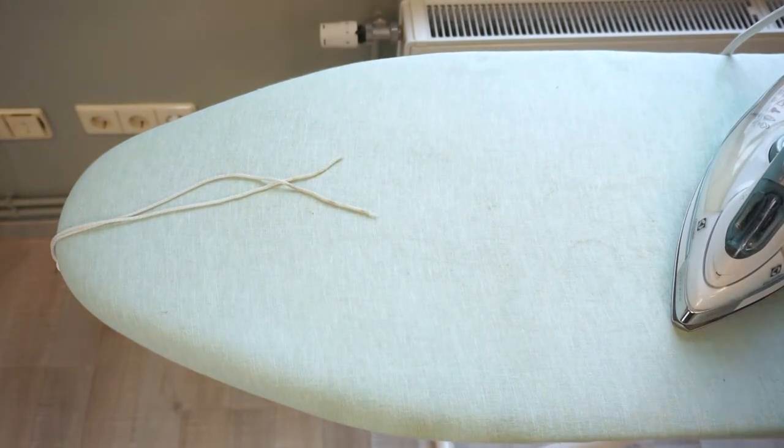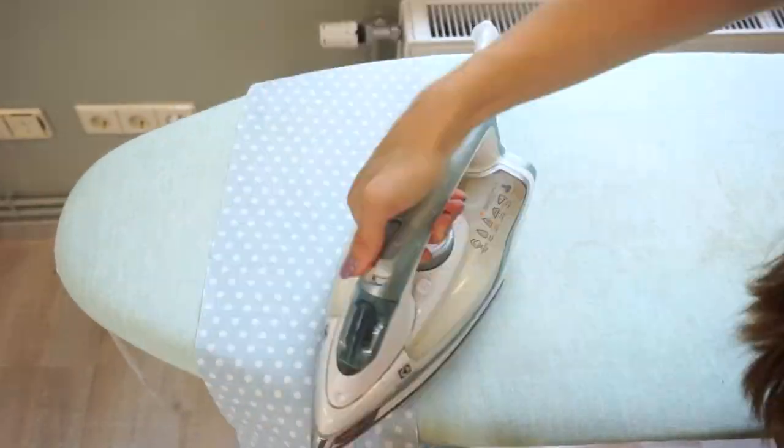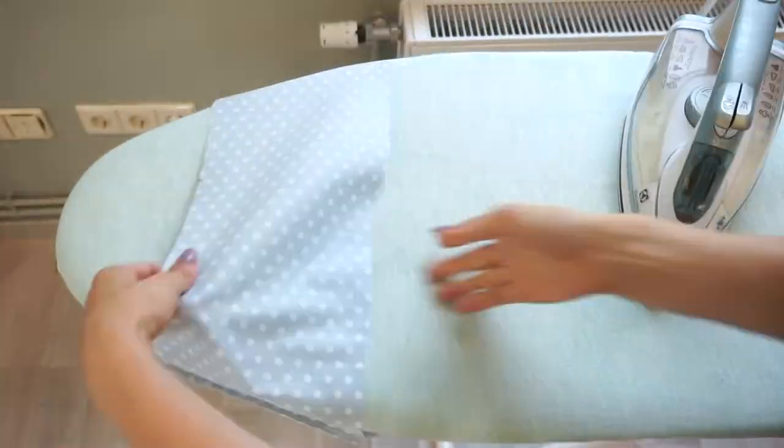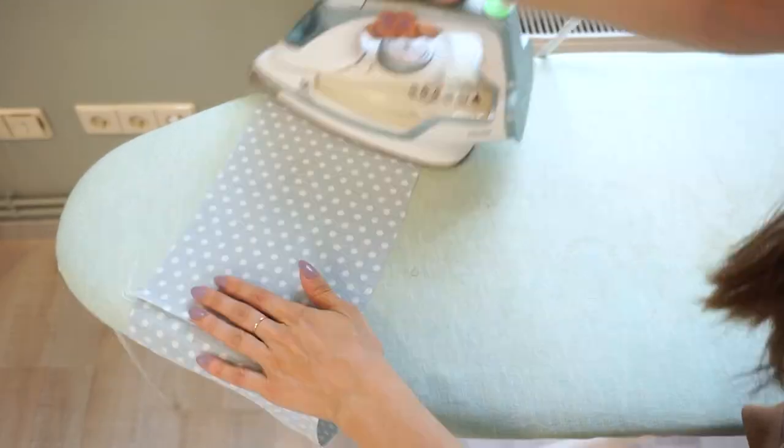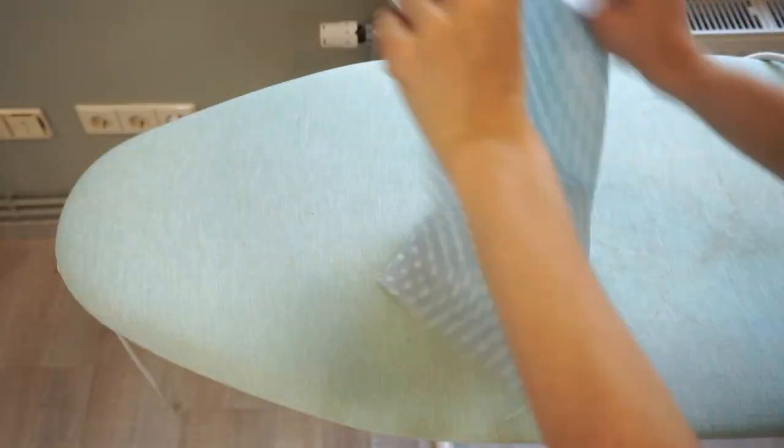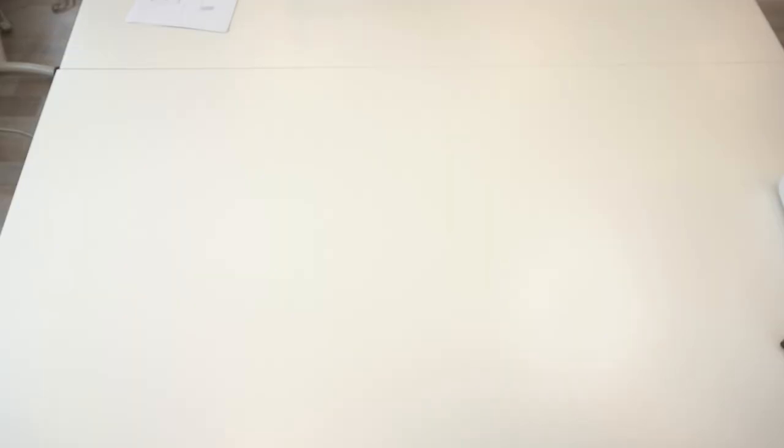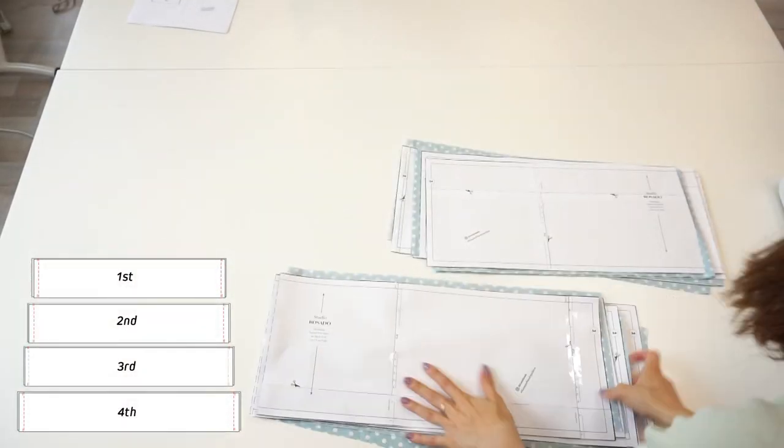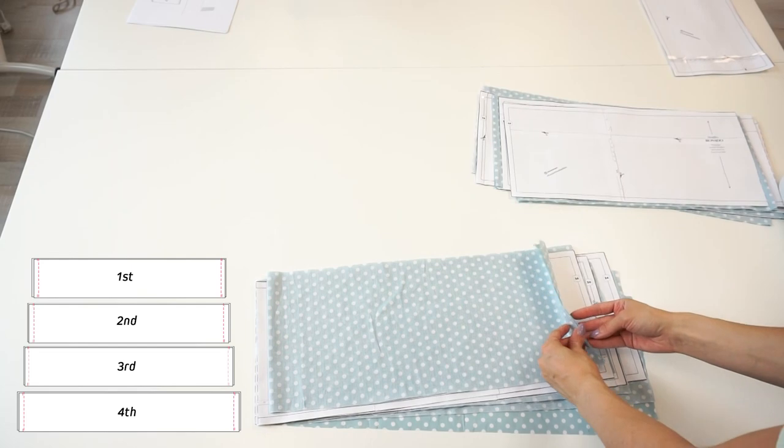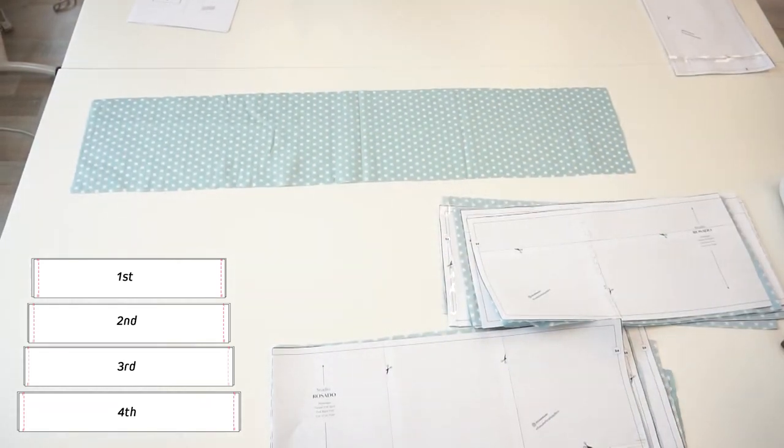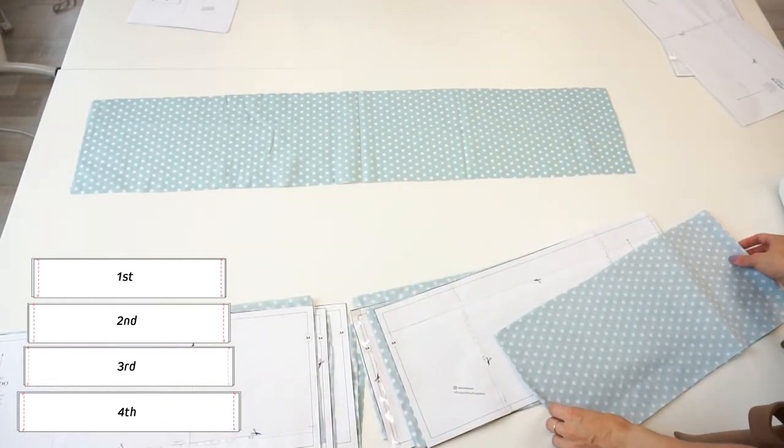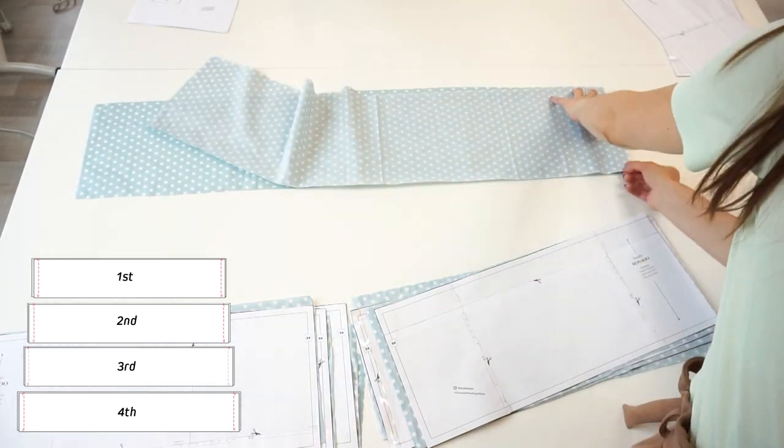If you neaten both layers together then press the seam towards the back, but if you neaten them separately then press the seam open. Now let's do the same steps with the frill panels. Lay back frill panels with front frill panels right sides facing and pin the side seams.